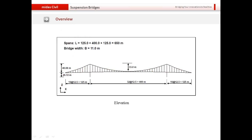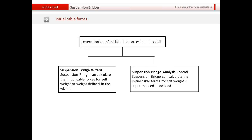This is how our suspension bridge will look. It's a three-span bridge where the main span is 400 meters long and the two side spans are 125 meters each. The key component in suspension bridge analysis is determination of initial cable forces. In Midas Civil, we have two components for this: the suspension bridge wizard, which calculates initial cable forces for the self-weight defined in the wizard, and the suspension bridge analysis control, which allows calculation of initial cable forces for self-weight and any additional superimposed dead loads.